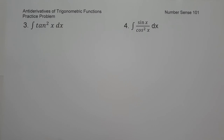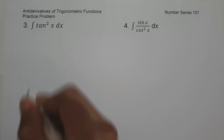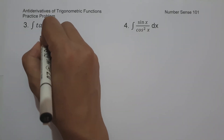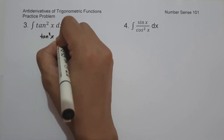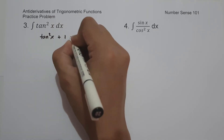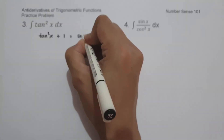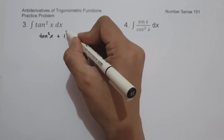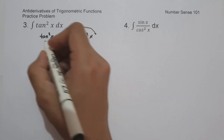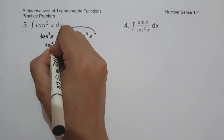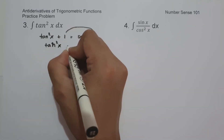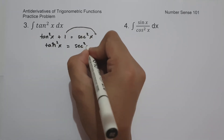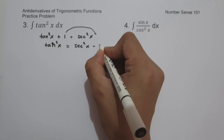On example number three, what is the antiderivative of tangent square x dx? To simplify this one, let us use Pythagorean identities. If we have tangent square x plus 1, that is equal to secant square x. And if we move 1 to the other side, it will give us tangent square x is equal to secant square x minus 1.